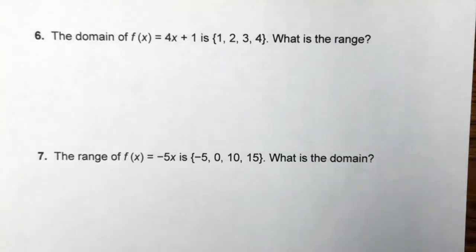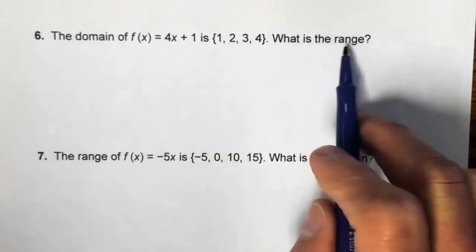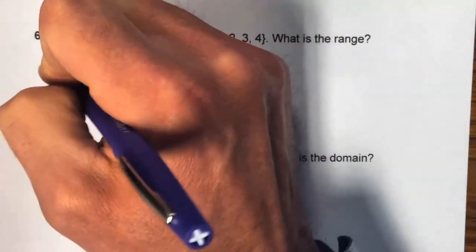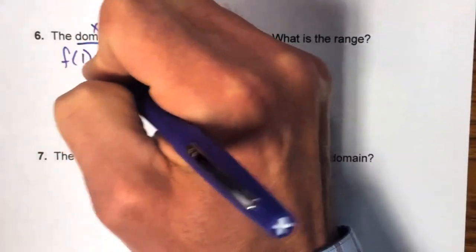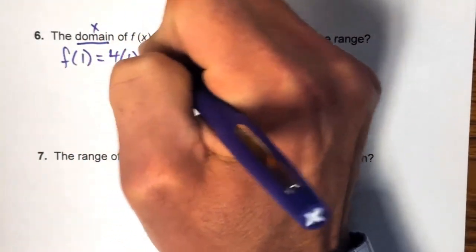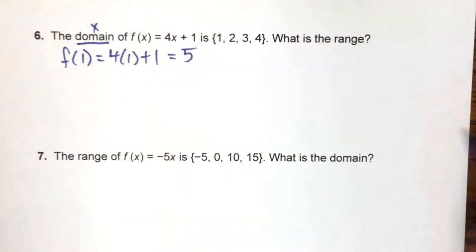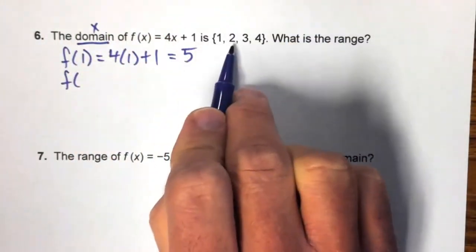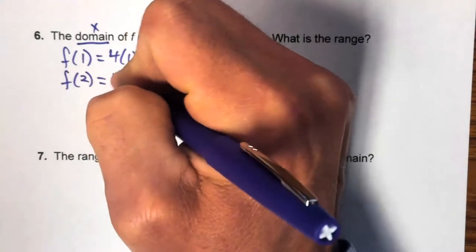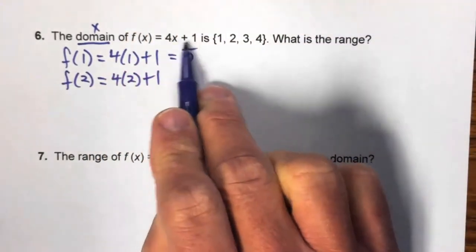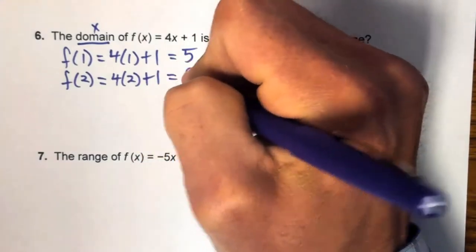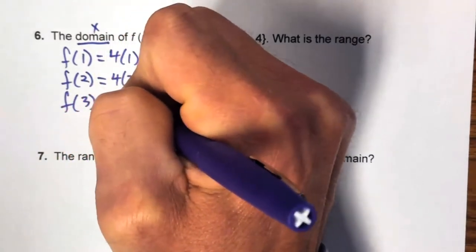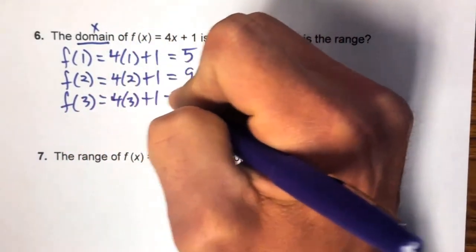Number six: the domain of f(x) = 4x + 1 is {1, 2, 3, 4}. Find the range by substituting each value. f(1) = 4(1) + 1 = 5. f(2) = 4(2) + 1 = 9. f(3) = 4(3) + 1 = 13.